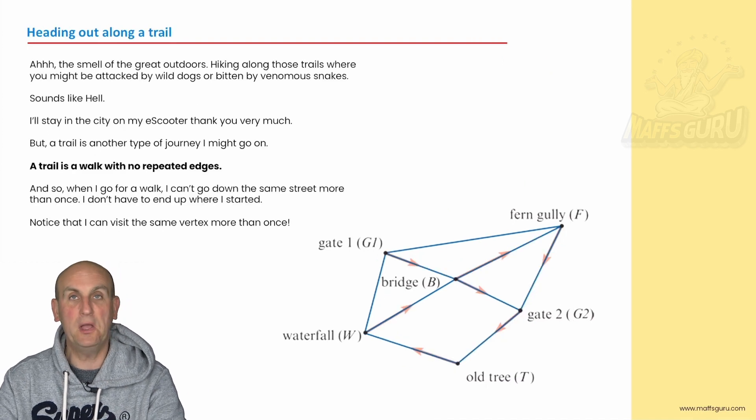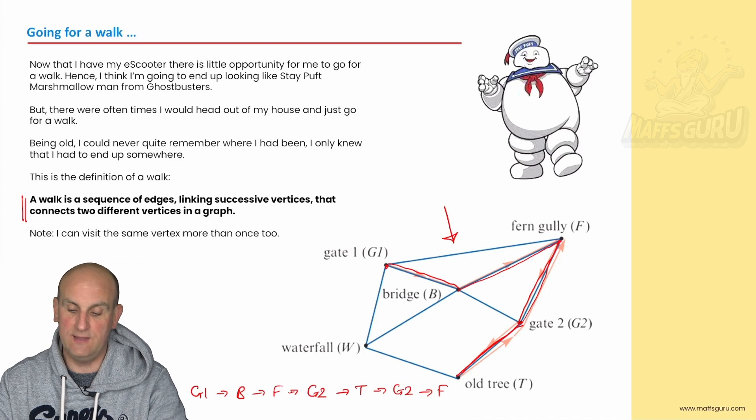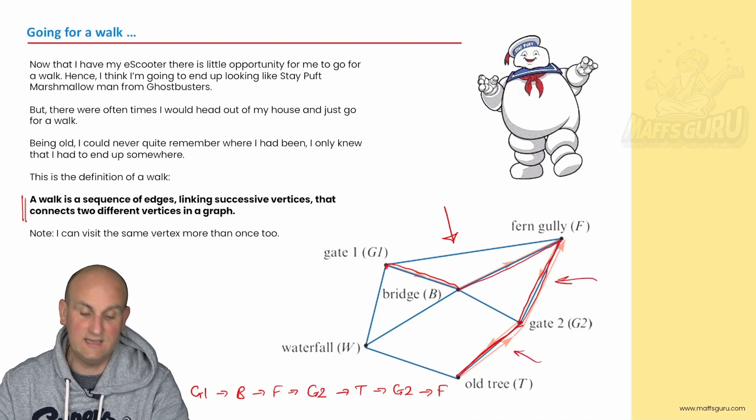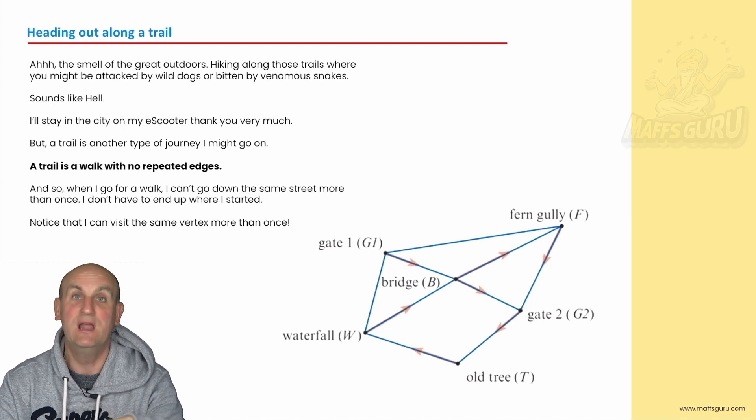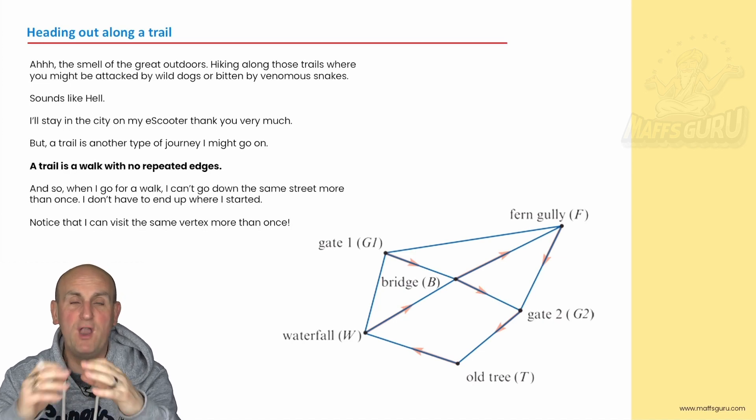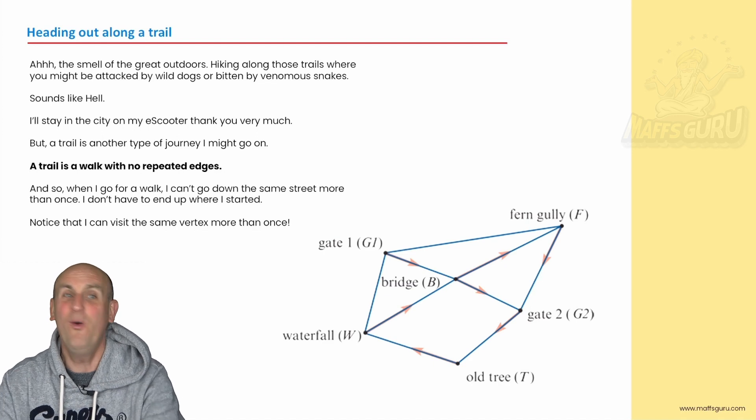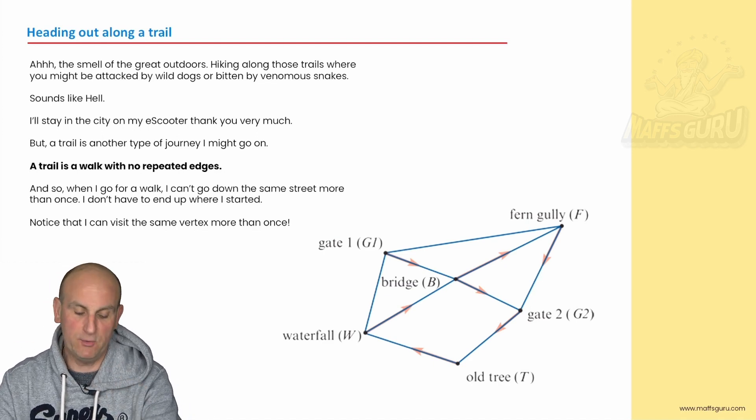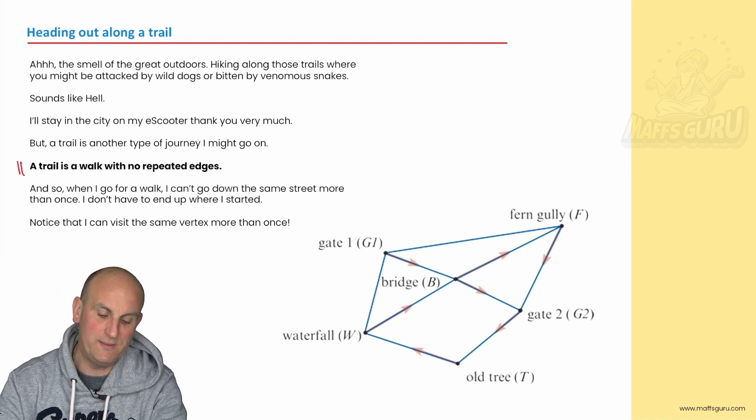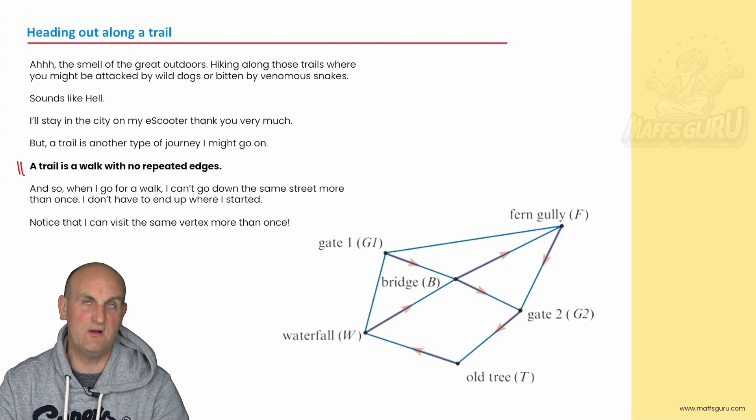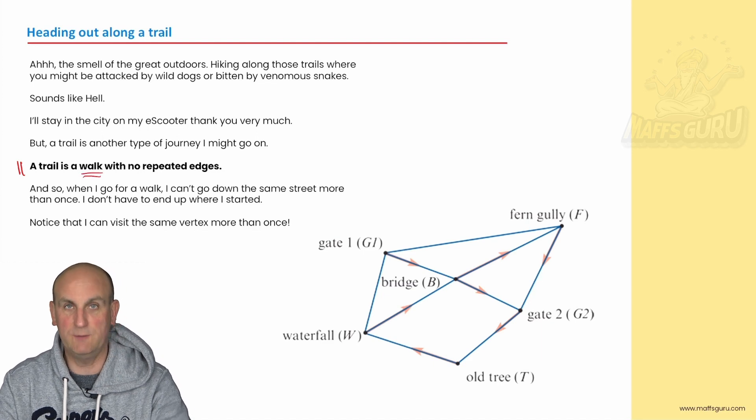What do we move on to next? A trail. Now as we work through these, the difference is whether you can repeat edges. Going back to this one again, what we noticed was that we repeated some edges. This edge here was repeated and that edge there was repeated, and that's perfectly okay in a walk. Now heading along a trail—yes, the smell of the great outdoors. And again I'm British living in Australia. Who does the outdoors? There are bugs and flies. The flies here are so big you can literally ride them. Put a saddle on them and ride them. And in certain parts of this strange country they bite. What do you mean flies bite? Get a grip.